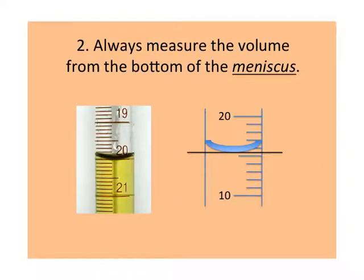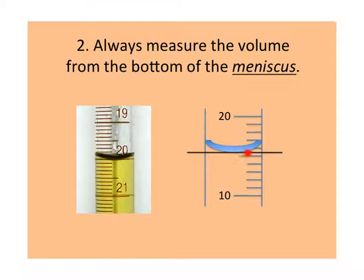Rule number two: always measure the volume from the bottom of the meniscus. Notice how on a real graduated cylinder the liquid is generally going to have a slight curve to it at the top. So we want to measure from the bottom of that curve, or that meniscus.